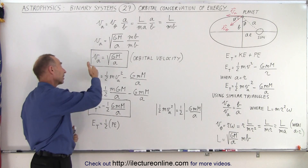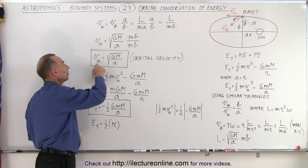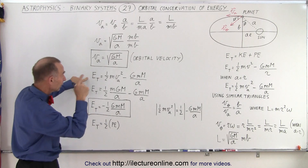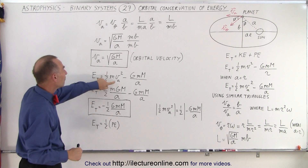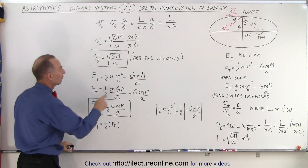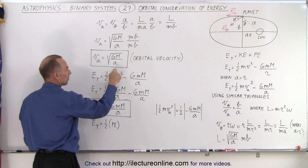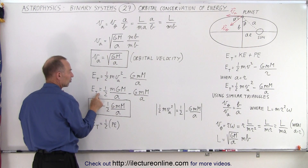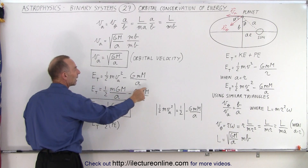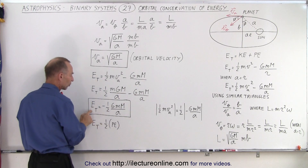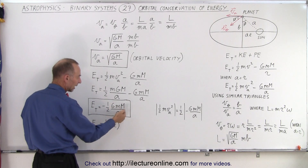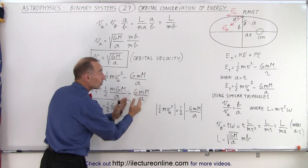At that point in the orbit, the total energy is one-half mV_A squared minus GmM over A. Substituting V_A squared equals Gm over A, we get total energy equals one-half m times Gm over A, minus a full GmM over A. Adding those two terms together gives total energy equal to minus one-half GmM over A. Essentially, that is half the potential energy.